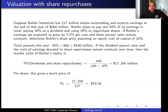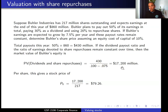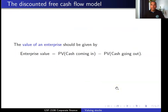Total payout this year is $430 million — 50 percent of $860 million — including dividends and share repurchases. The value of the company's equity is the present value of all future dividends and share repurchases. The next payout to shareholders is $430 million, the equity discount rate is 10 percent, and the growth rate of all payouts is 7.5 percent. This gives a total equity value of $17,200 million. Dividing by 217 million shares gives a correct stock price of $79.26. Next we will cover the discounted free cash flow model.